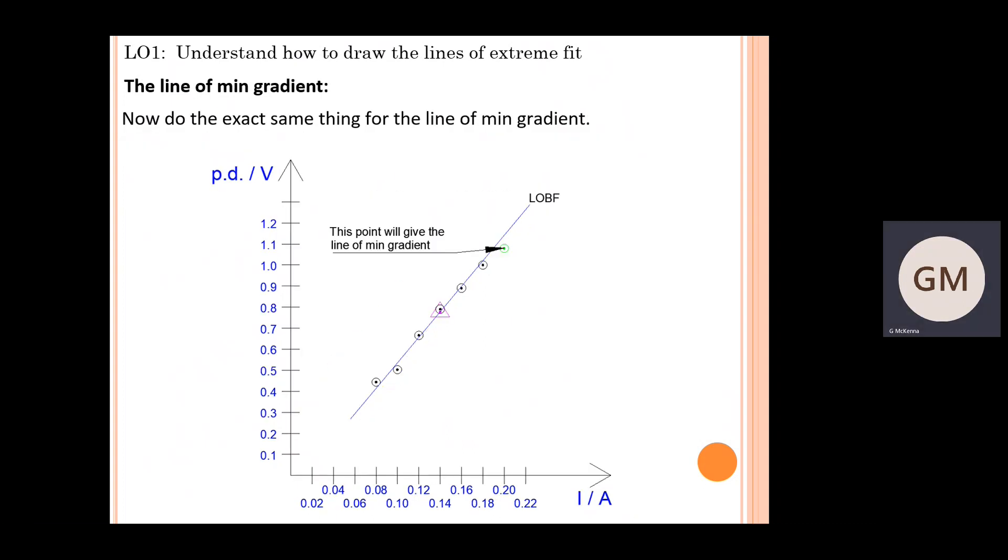We now need to go through the exact same process for getting the line of the minimum gradient. First, identify which plotting point you believe, if you were to plot a straight line through it and the centroid, will leave you with the minimum possible gradient given your plotting points.